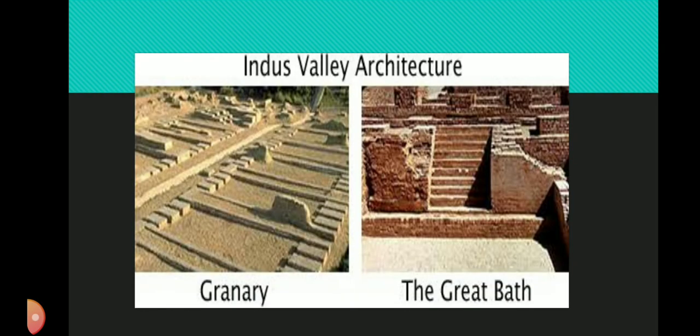The Great Bath: The most impressive structure excavated at Mohenjo-daro is the Great Bath, constructed with clean burnt bricks. This monumental bath is a pool 12 meters long, 7 meters wide and 2.5 meters deep. Gypsum along with mortar was used to make the floor and walls waterproof. The pool is at the center of a large open quadrangle with rooms and galleries on all sides, and steps at either end connect it to changing rooms.